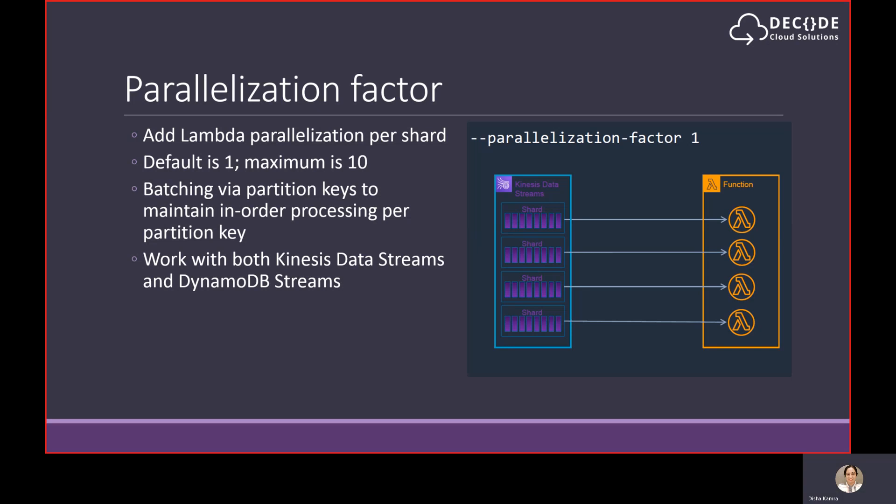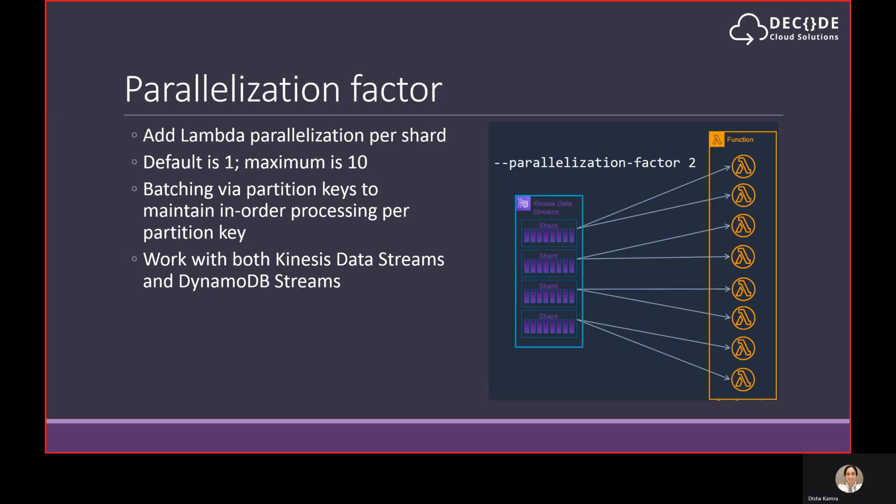By default, there is one instance of a Lambda function per shard in a stream. You can increase the number of concurrent Lambda functions processing a shard by changing the parallelism factor, and batches maintain in-order processing per partition key. This feature is available for both Kinesis Data Streams and DynamoDB Streams. Changing the factor from one to two means each shard now has two instances of the consuming Lambda function processing batches in parallel. The result is that records are processed in half the time, and you can increase this value to a maximum of 10.